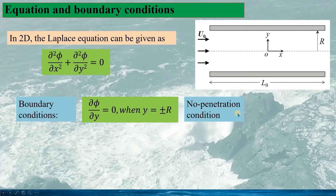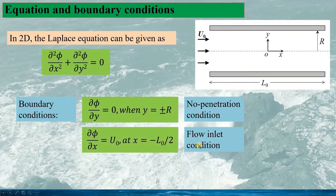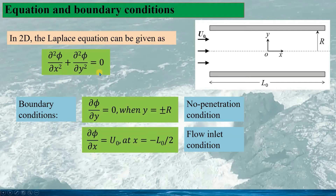This is essentially the no-penetration condition, meaning the fluid cannot penetrate through the pipe wall. At the inlet, the flow velocity is given as U0, at x equal to minus L0 divided by 2. To solve the problem, we need to find the velocity potential function phi that satisfies the Laplace equation as well as all the boundary conditions.